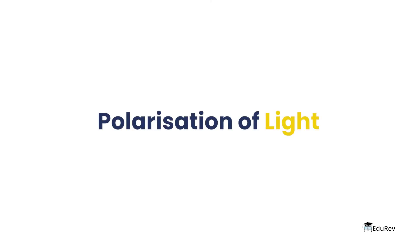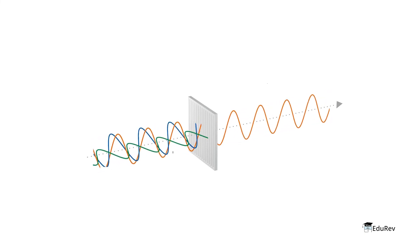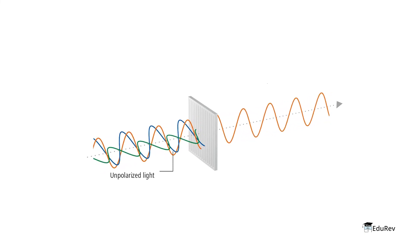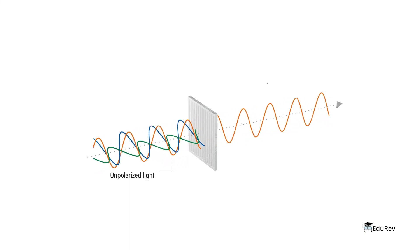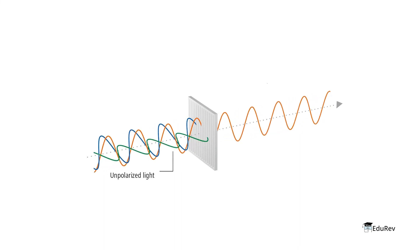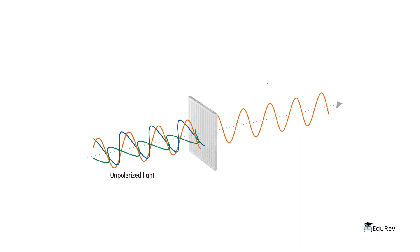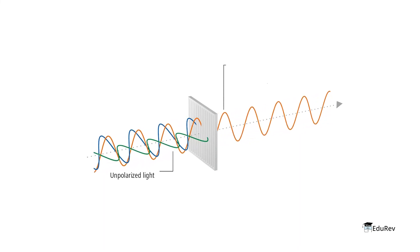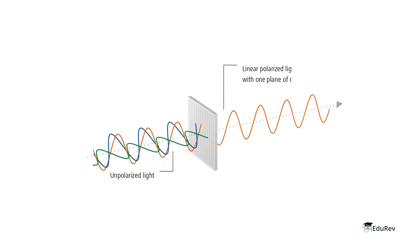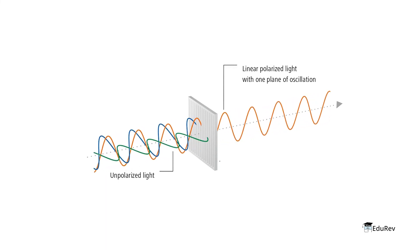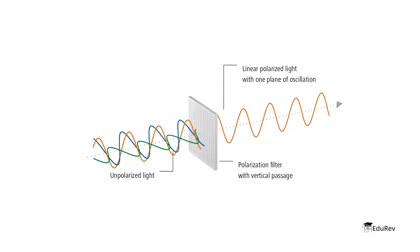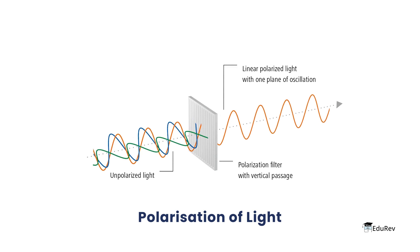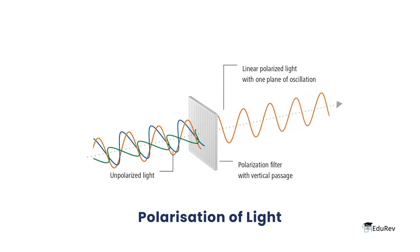Polarization of light: normal light vibrates in all directions perpendicular to the propagation of light. If the light is constrained to vibrate in only one particular plane, then the light is called polarized and the phenomenon is called polarization, as shown in the video.